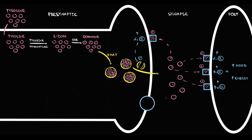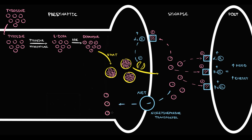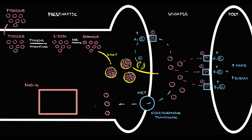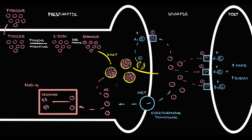What happens to norepinephrine molecules that did not have time to bind to any receptor? On the presynaptic neuron we have a norepinephrine transporter called NET. This transporter uptakes free norepinephrine molecules and delivers them back to the presynaptic neuron, where monoamine oxidase B is waiting for them. Most of the delivered norepinephrine molecules have a tragic fate — monoamine oxidase uptakes and destroys them. But some norepinephrine molecules are able to slip away and replenish the norepinephrine pool inside the vesicles. Mirtazapine blocks the alpha-2 receptor on the presynaptic neuron.